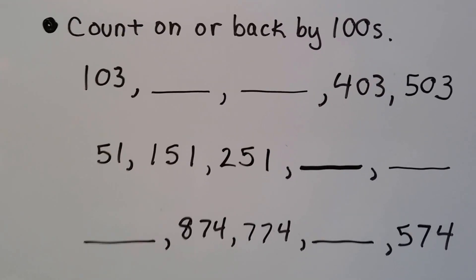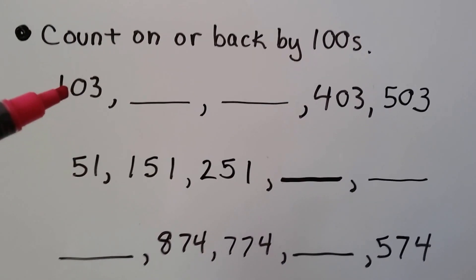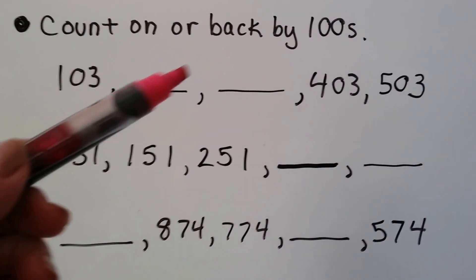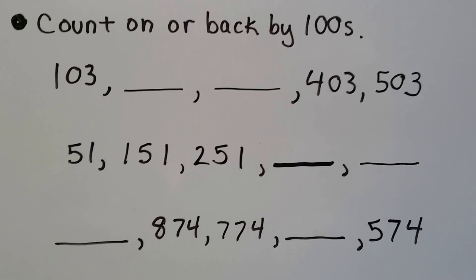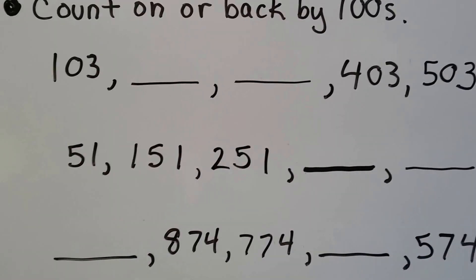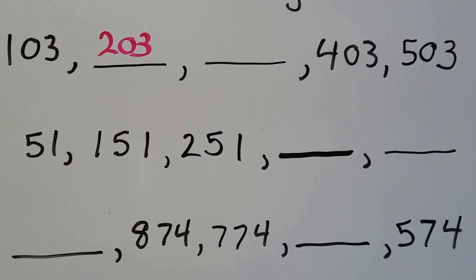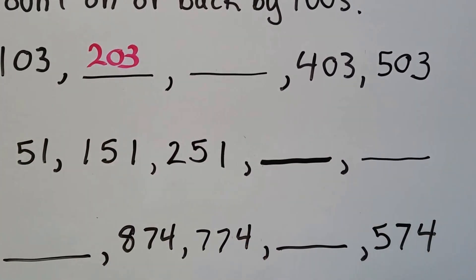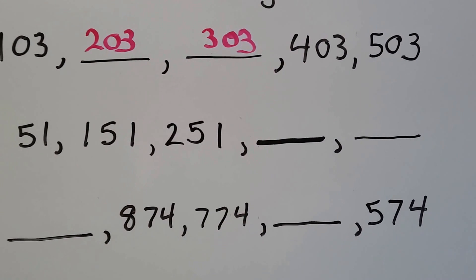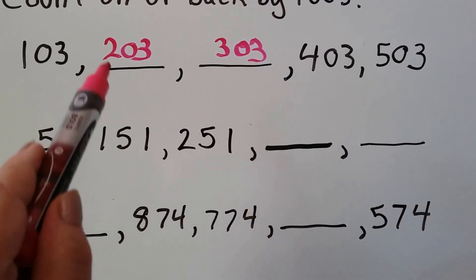Now let's count on or count back by hundreds. Are the hundreds place digits getting larger or smaller? It goes from a one to some missing numbers to a four to a five — they're getting bigger, so it's counting on. We need to add one more hundred, giving us 203. Add one more hundred and if you said 303, you're right. Then 403, 503 — see the pattern: one, two, three, four, five, counting on by hundreds.